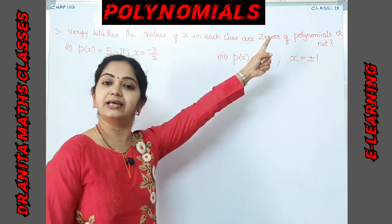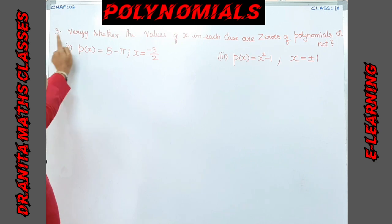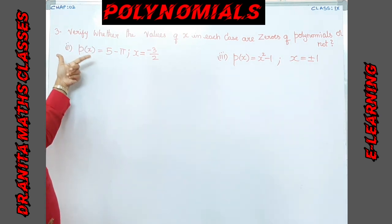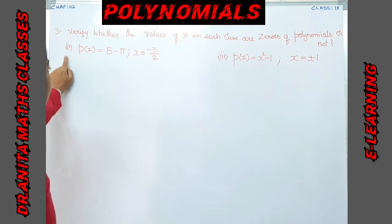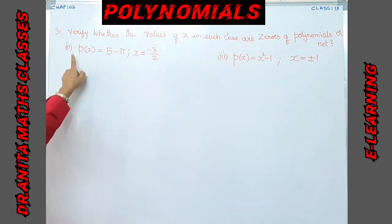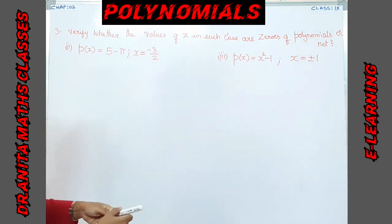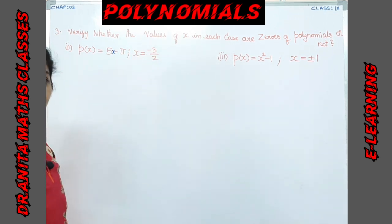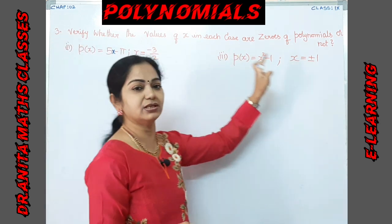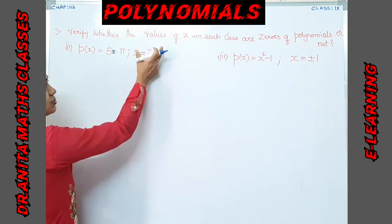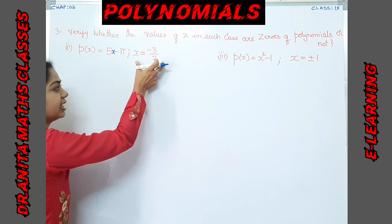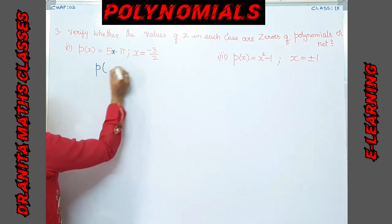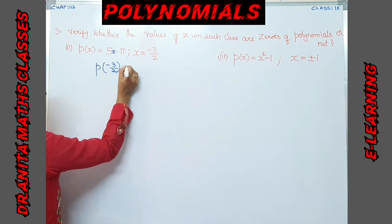Those who have not watched those videos please click on the 'i' button to get notified. Now, the third problem: verify whether the values of x in each case are the zeros of the polynomials or not. The first part was done in the previous session. For the second part, the polynomial is 5x minus π, where x is given as minus 3 by 2. To check, we substitute the x value into the polynomial and see whether the result is 0 or not.